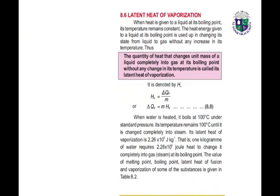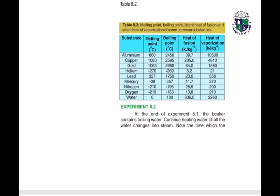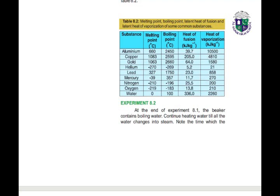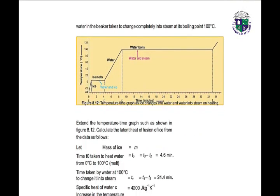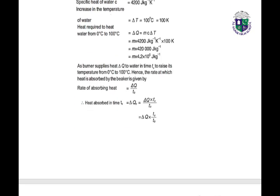The latent heat of vaporization is the quantity of heat that changes unit mass of a liquid completely into gas at its boiling point without any change in temperature. It is denoted by H_V, and its formula is delta Q_V over mass. When water is heated, it boils at 100°C and its temperature remains at 100°C until it is completely converted into steam. The latent heat of vaporization of water is 2.26 × 10⁵ J/kg. The table shows different substances with their melting points, boiling points, heat of fusion, and heat of vaporization. The temperature-time graph shows ice changing into water and water into steam.